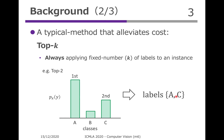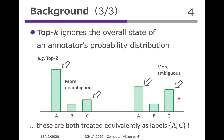This method seems less arduous than ordinary labeling because it does not matter if the annotator is not able to decide which of A or C should be the final conclusion. However, there is one problem in top-K. As top-K does not consider the overall state of an annotator's probability distribution, ambiguous instances and unambiguous instances are treated equally after they have been annotated. So in this example, A is by far the most likely true class in the distribution on the left, whereas the probability for A and C are mostly the same in the distribution on the right — but these two are exactly the same in terms of labels A and C.